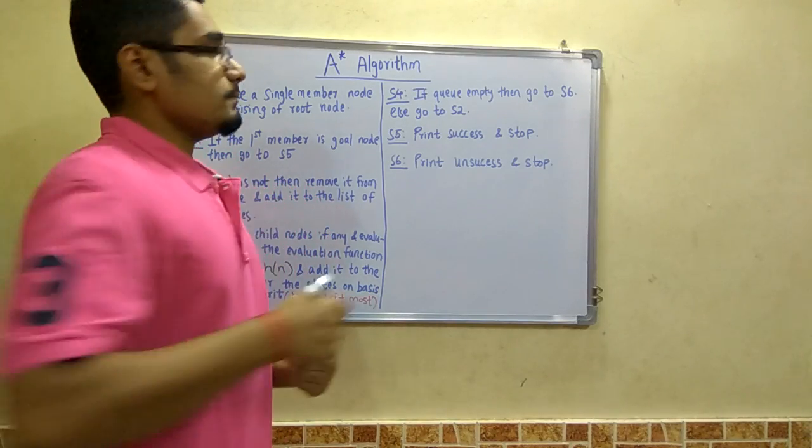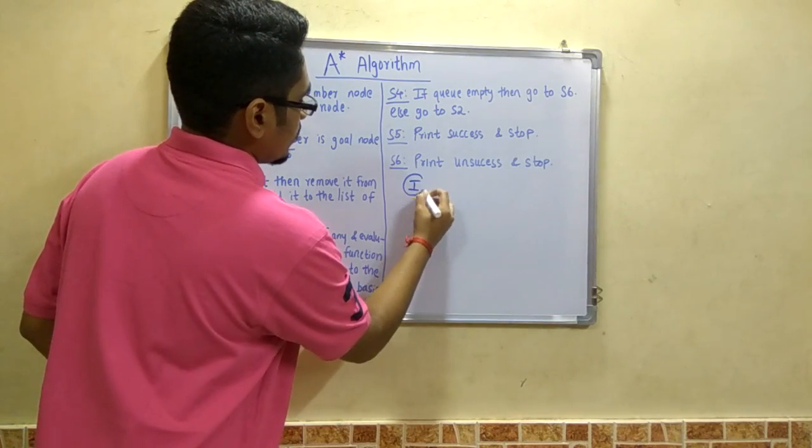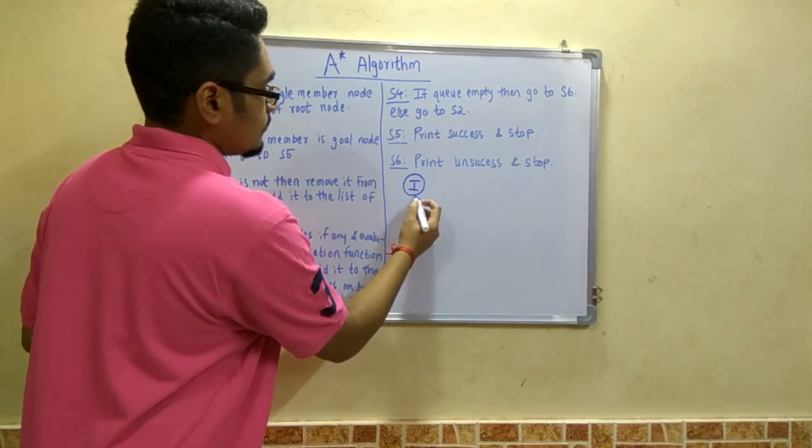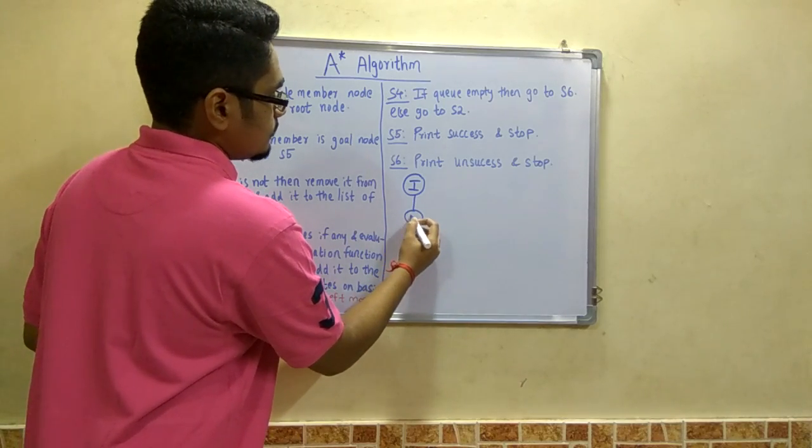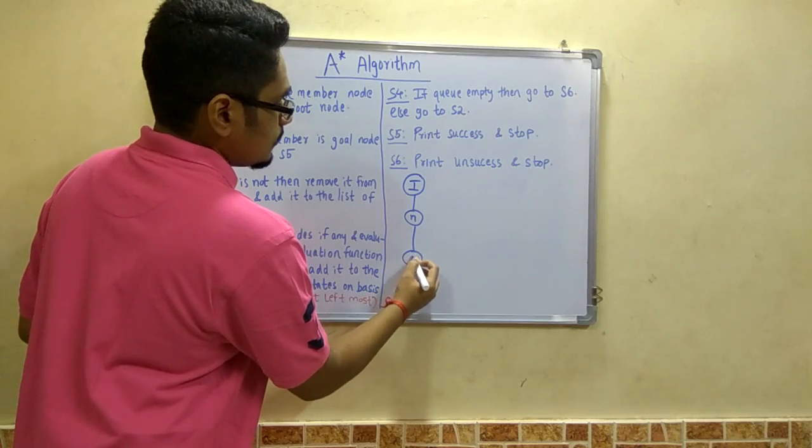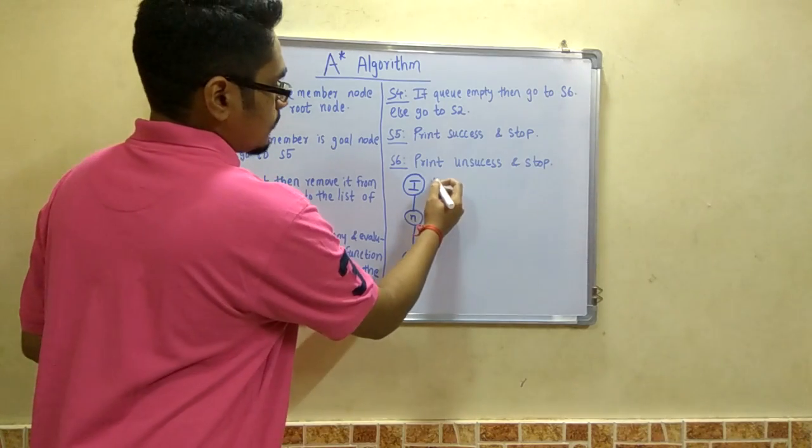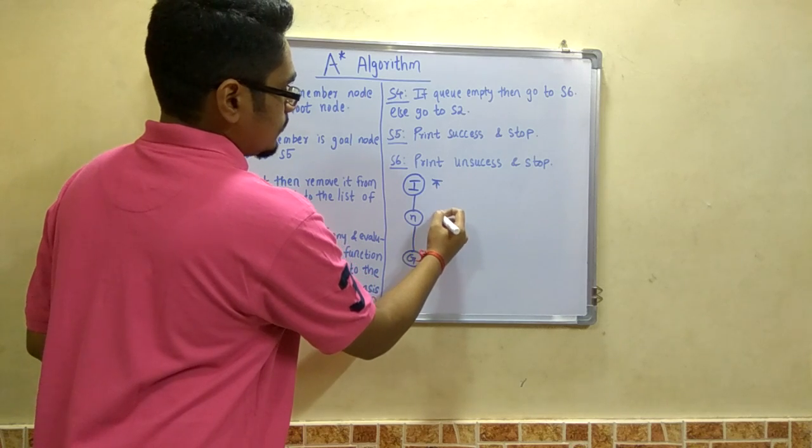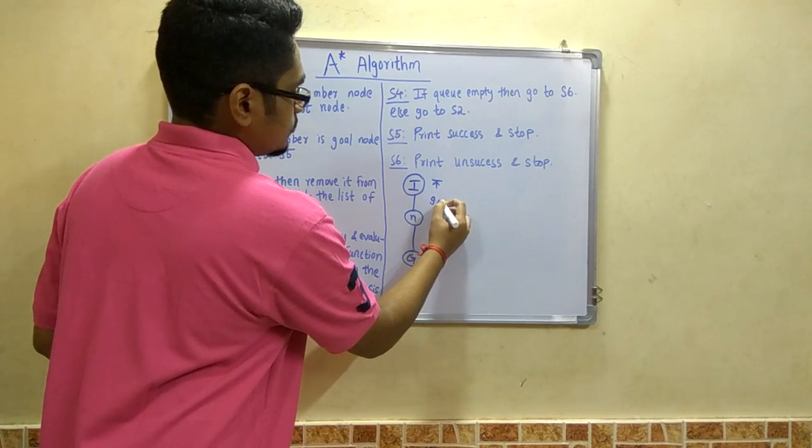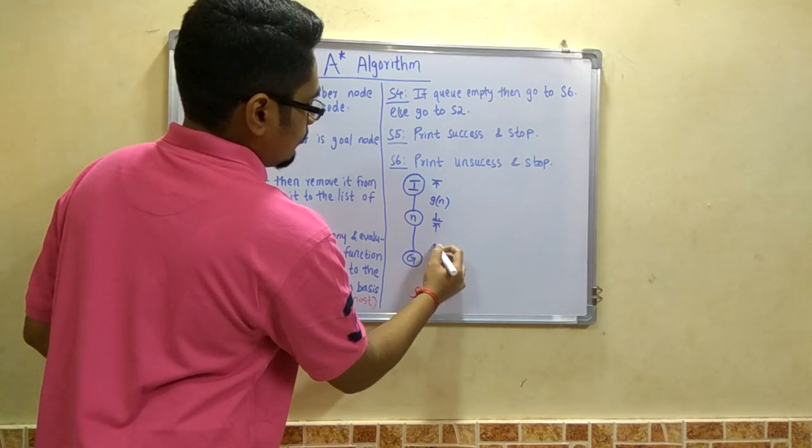Let me give you a brief idea about this. For example, this is the initial state I, this is state N, and this is the goal state G. I assign a distance from I to N as G, and from N to G I assign H.